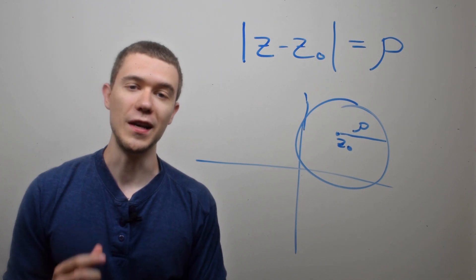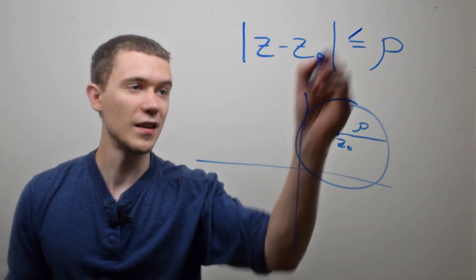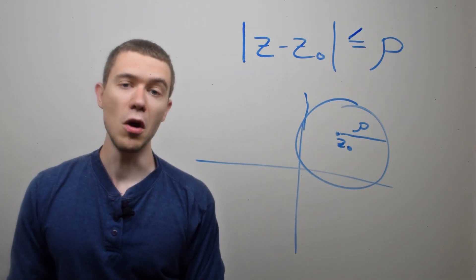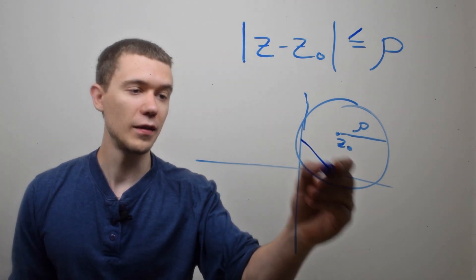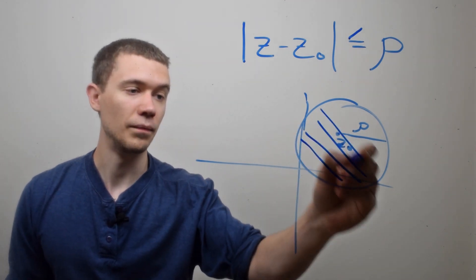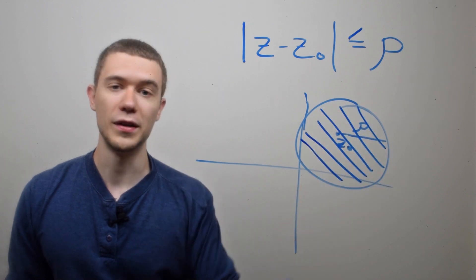If I instead change this equal sign to a less than or equal to sign, now I'm not only talking about the circle, but also everything inside the circle. And so sometimes we call this a disk.